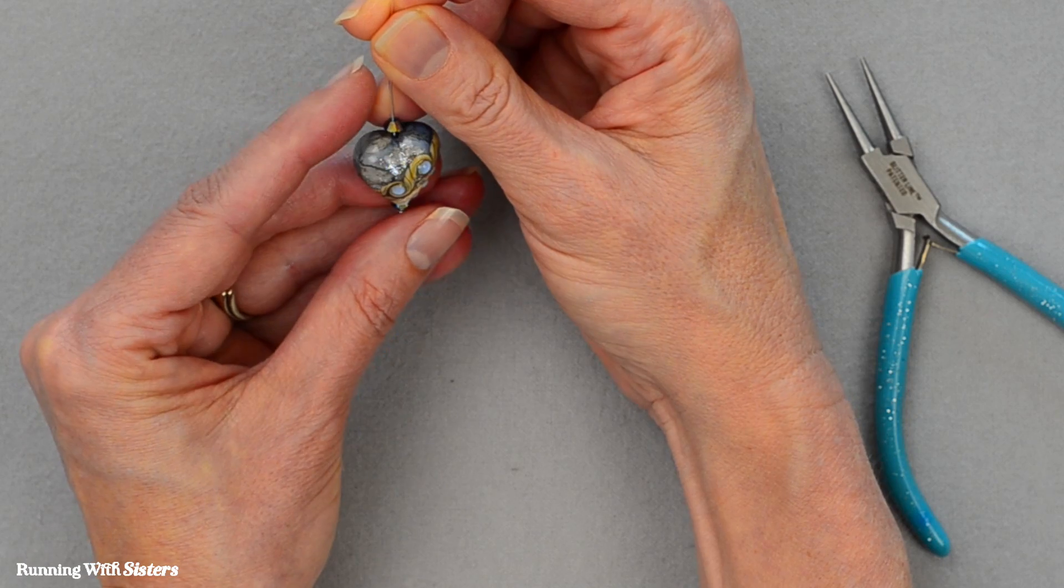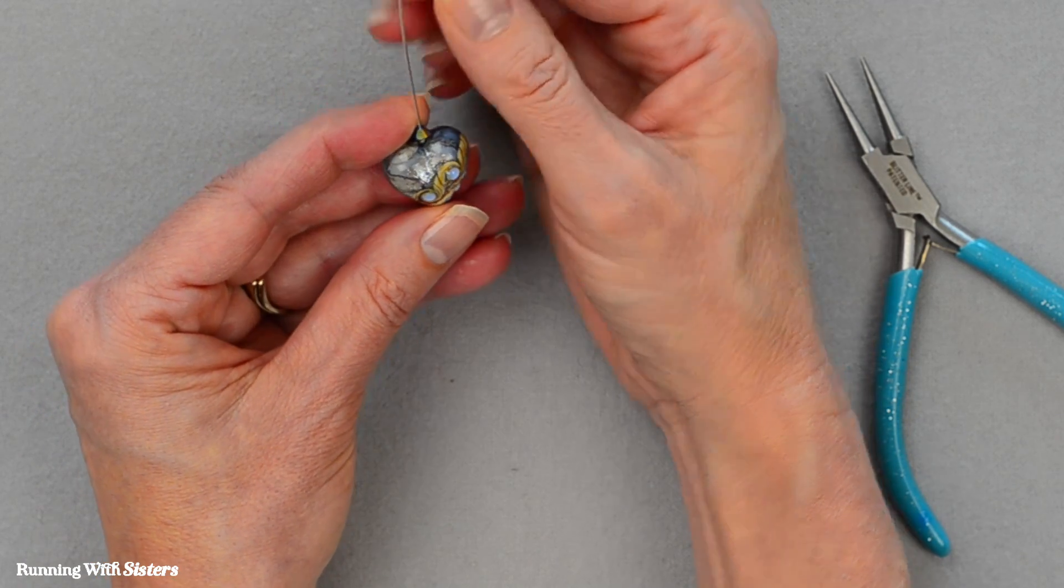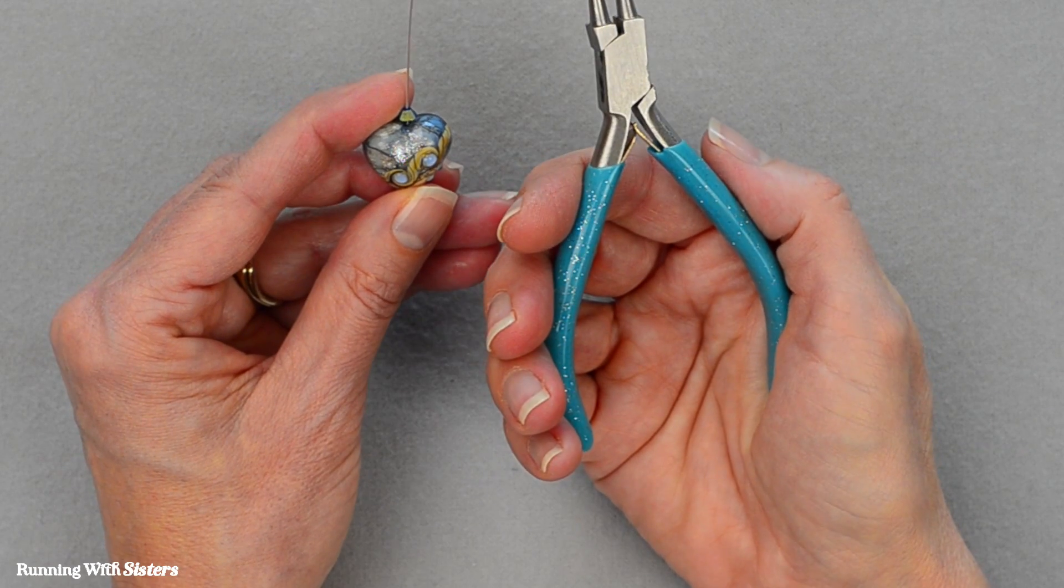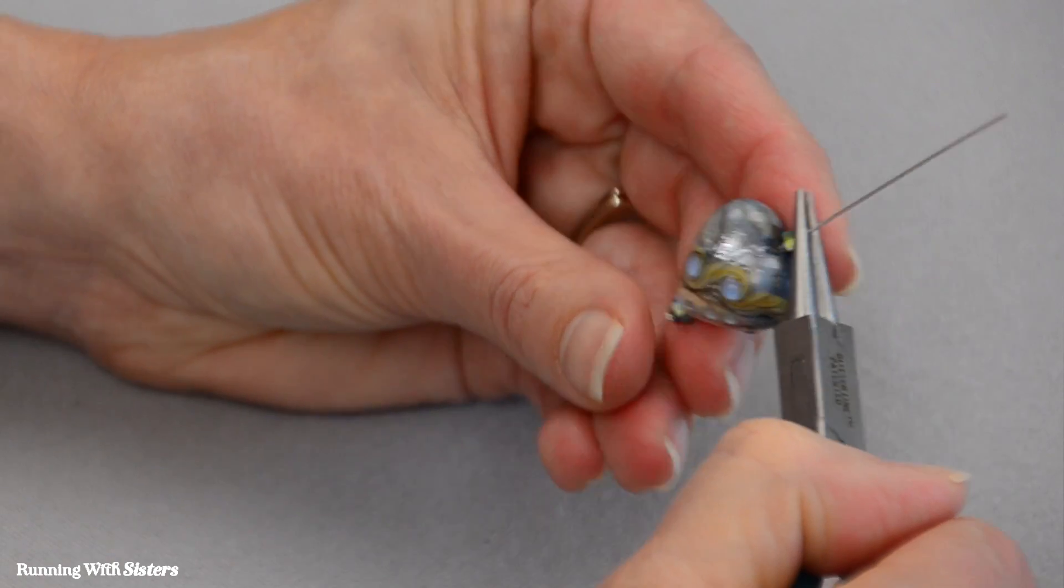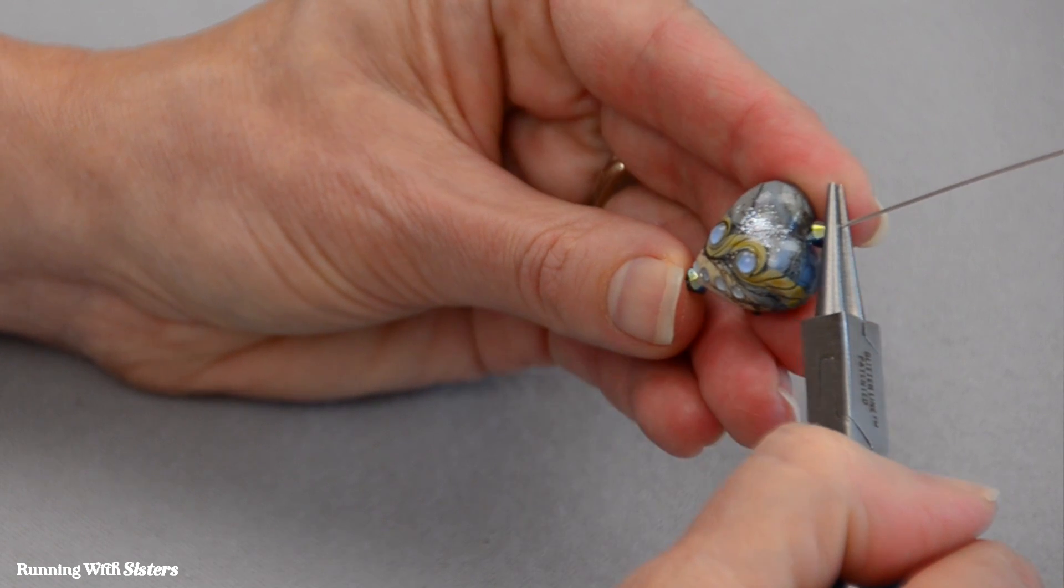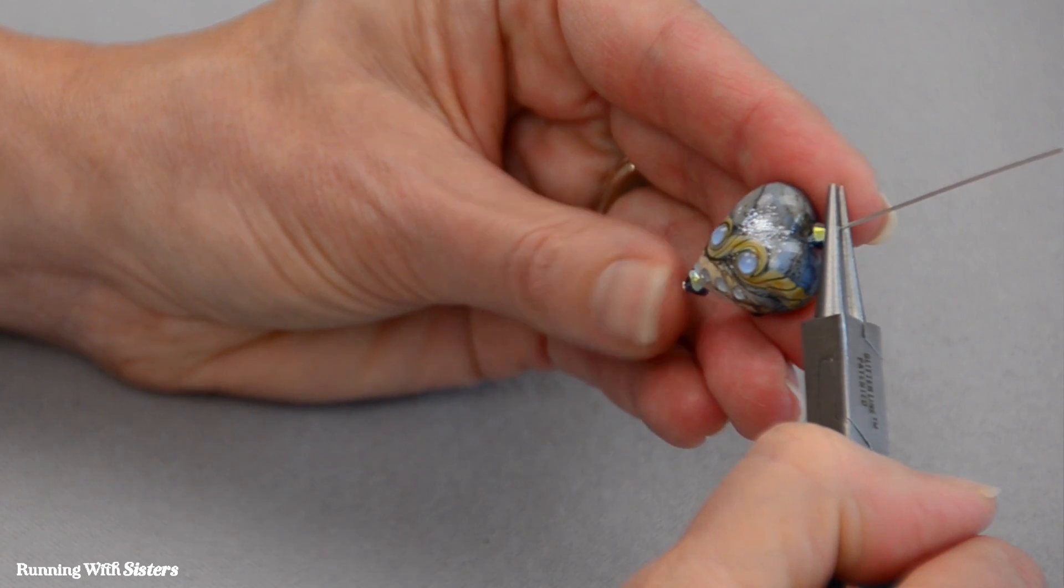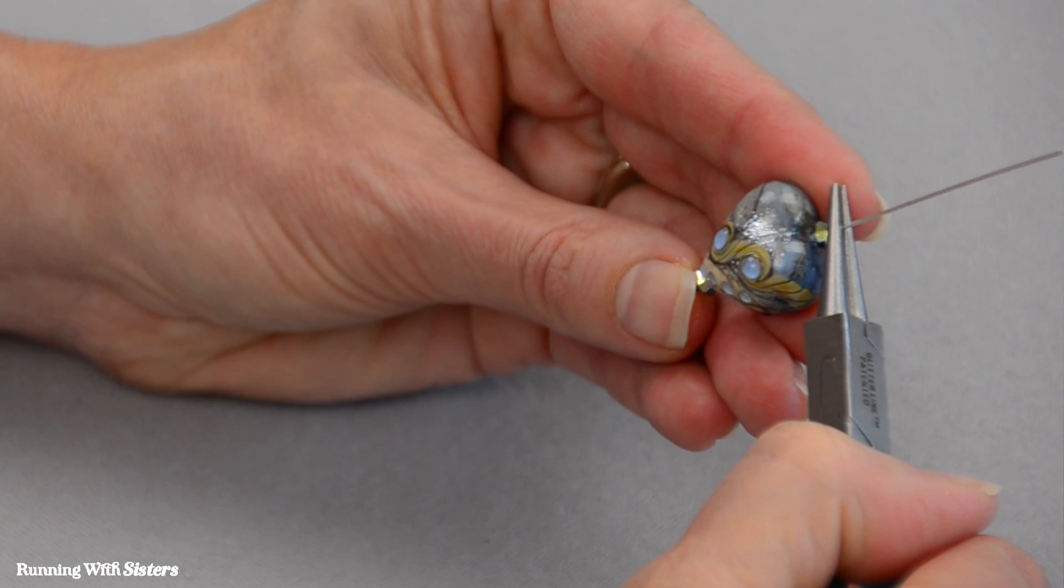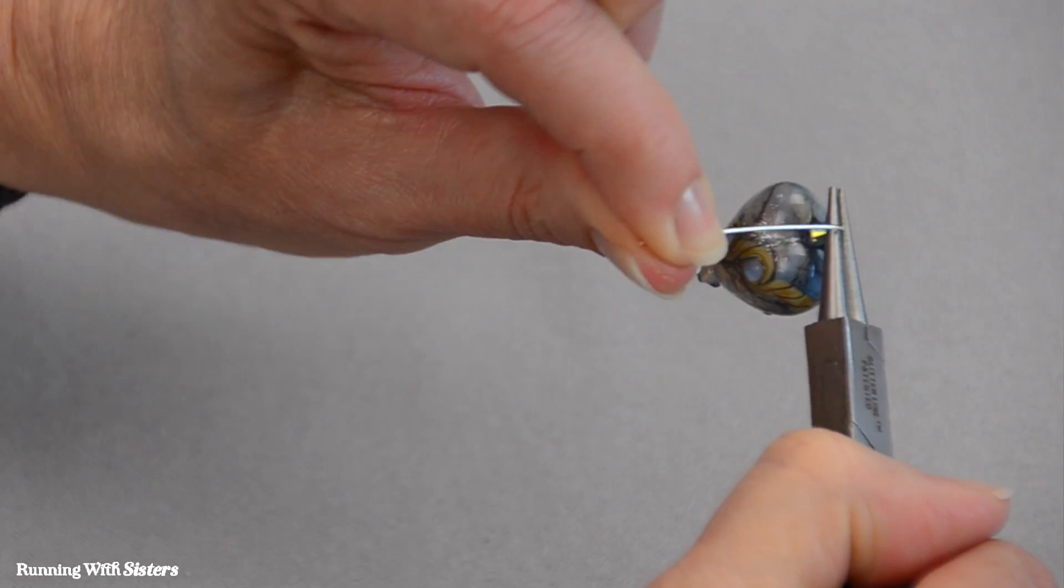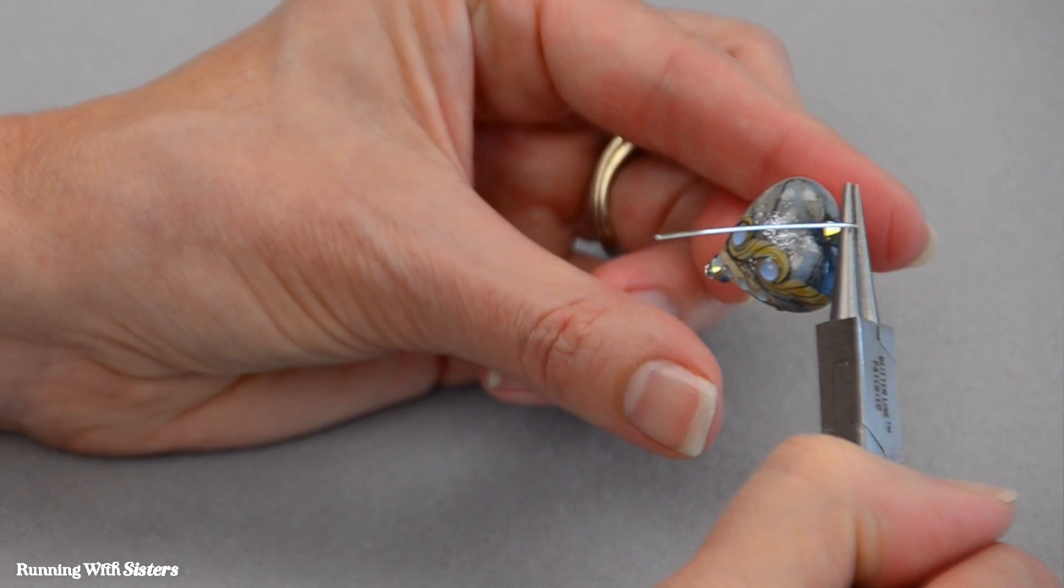And now to turn this into a pendant that hangs on a cord we're going to make a wrapped loop. To do that we've got round nose pliers. The first thing I'm going to do is press the bead and the end of that head pin up against the round nose pliers so that the bead doesn't slide around. I'm taking out the slack there. And I'm going to make a 90 degree bend in that head pin wire just like that.